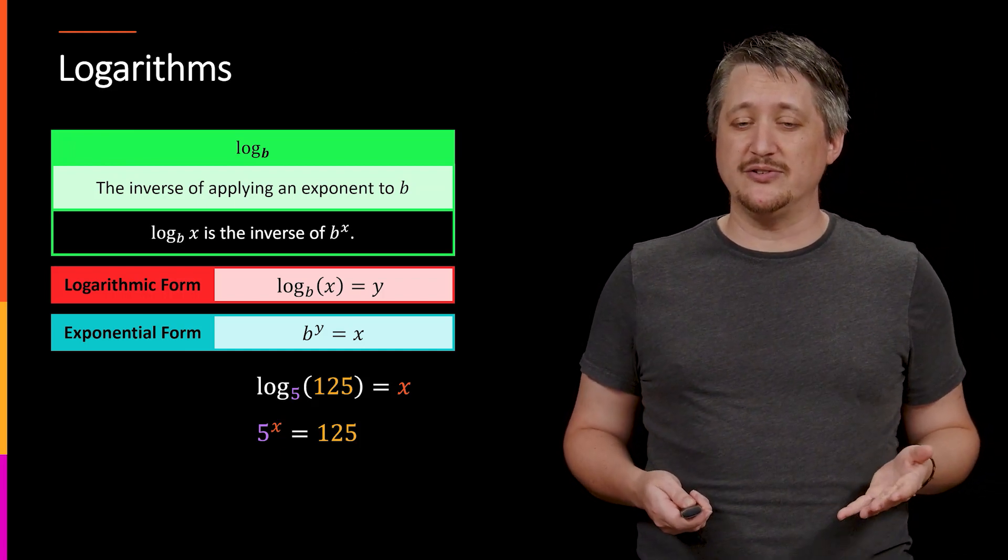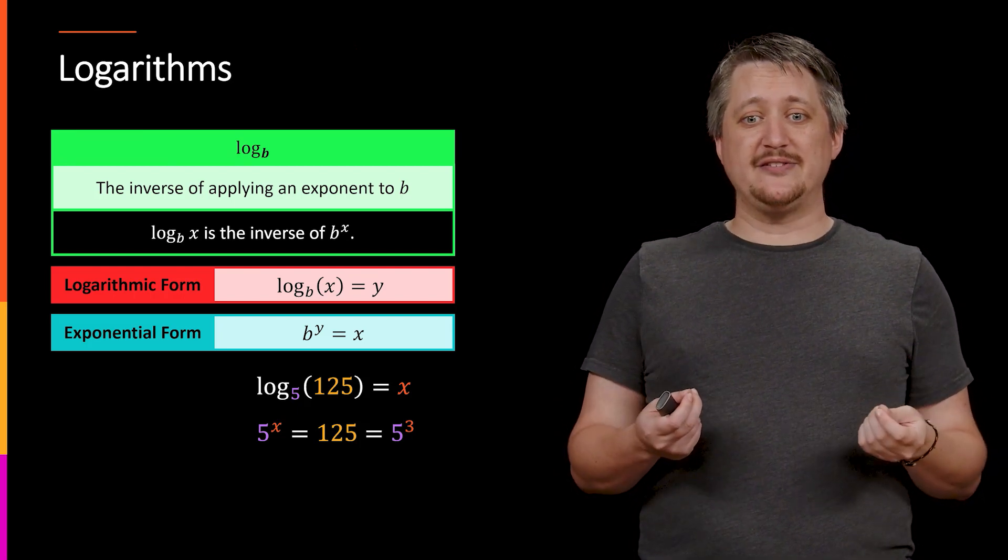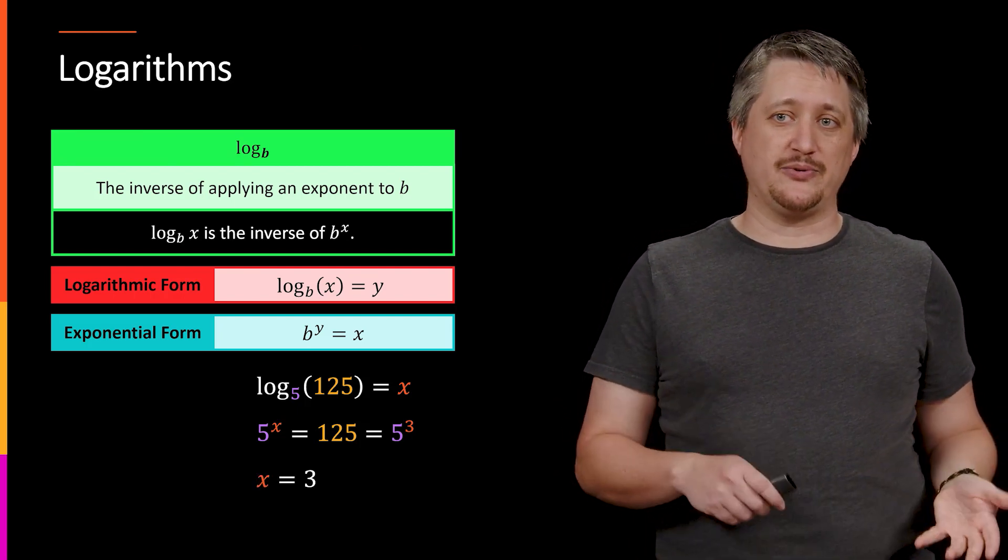But now I'm thinking, ah, I have better intuition about exponentials. 125, that's really 5 cubed. But now I have the same base, so really what that's telling me is x equals 3, right?